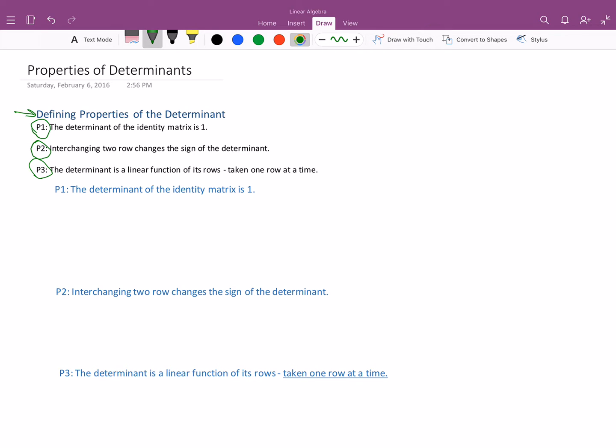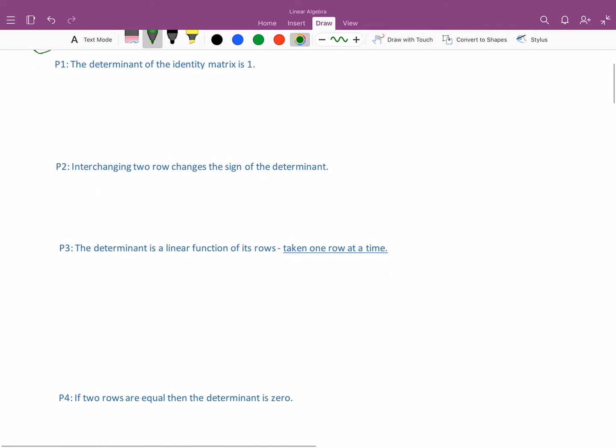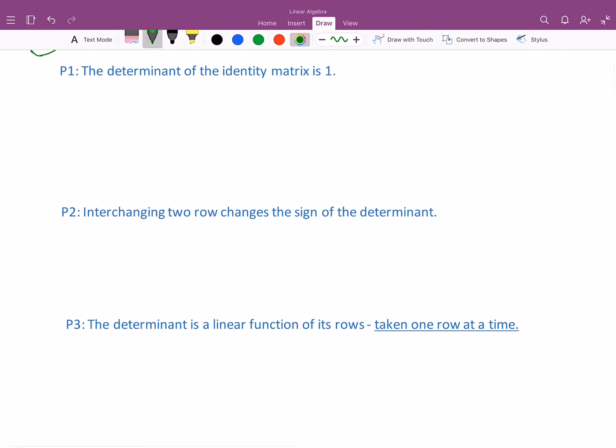So to start here, let's take a look at the first property that the determinant of the identity matrix is 1. So what that means is if I write determinant of 1, 0, 0, 1, that's the 2 by 2 identity, that determinant is equal to 1.